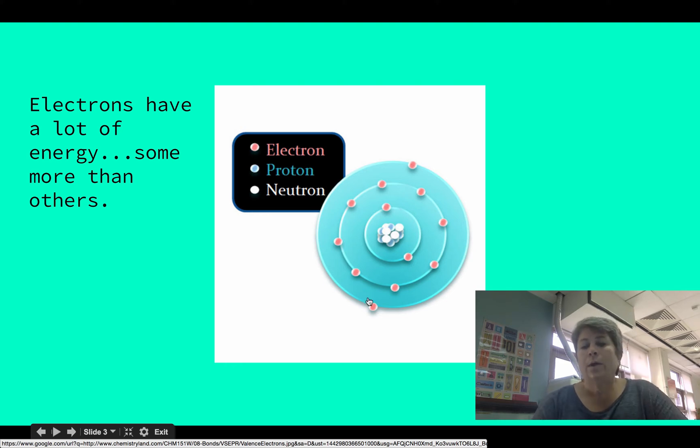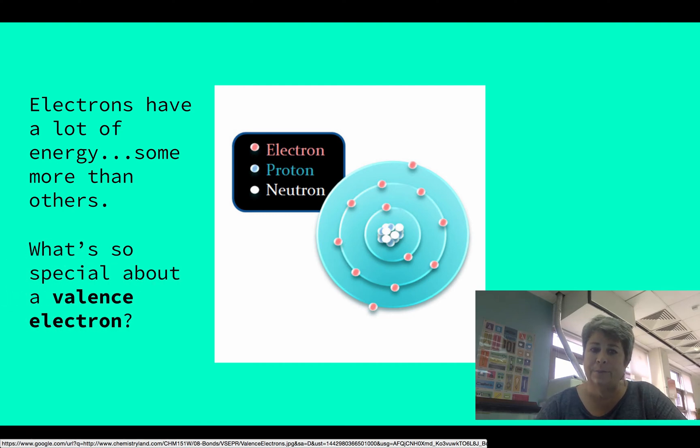We say that the ones in this outer energy level are the ones with the highest level of energy. All of the electrons are high energy, but the ones that are furthest from the nucleus are the ones that have the highest energy level. We call those valence electrons.